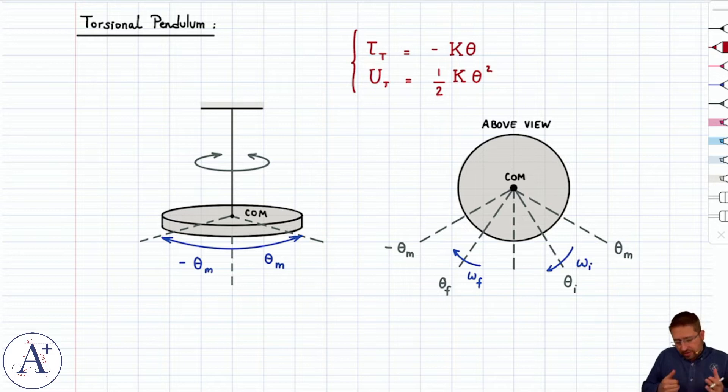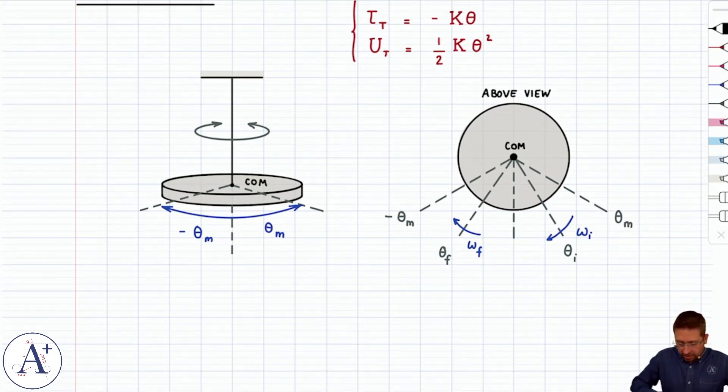With that in mind, we can write mechanical energy at two arbitrary points in the rotation of this pendulum. I drew a disk, but it doesn't have to be a disk. It could be a sphere, a hollow sphere, or a rod.